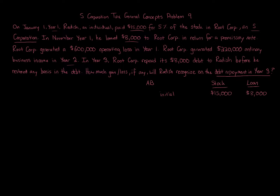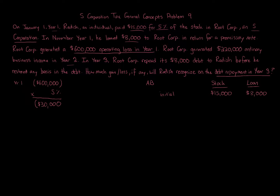In Year 1, Root Corp generated a $600,000 operating loss. Radish owns 5%, so $600,000 times 5% equals a $30,000 loss allocated to him. The question becomes: can we use all $30,000? The answer is no, because $15,000 plus $8,000 equals $23,000 — that's not enough basis. So we are only able to deduct $23,000 of the loss in Year 1.